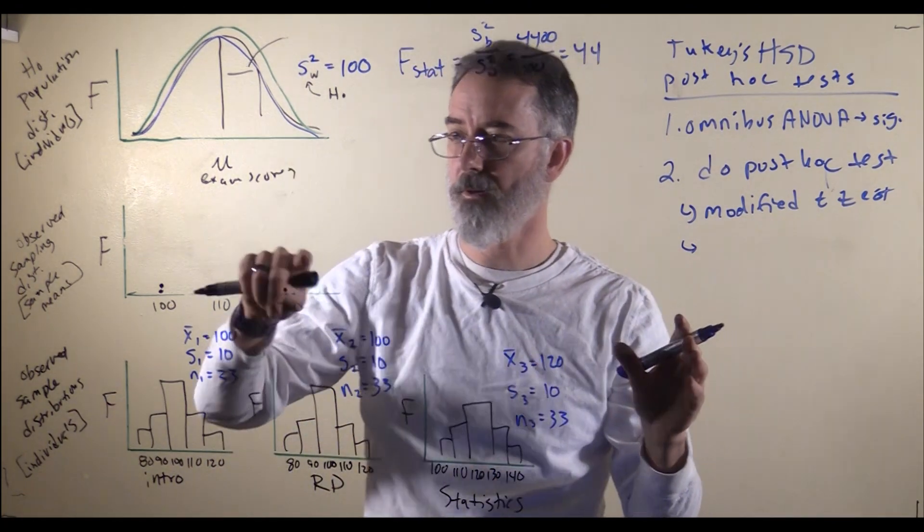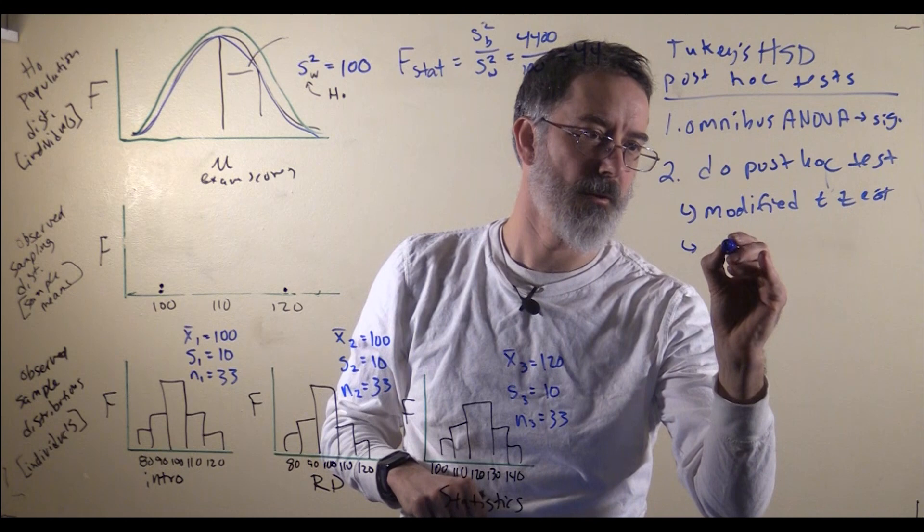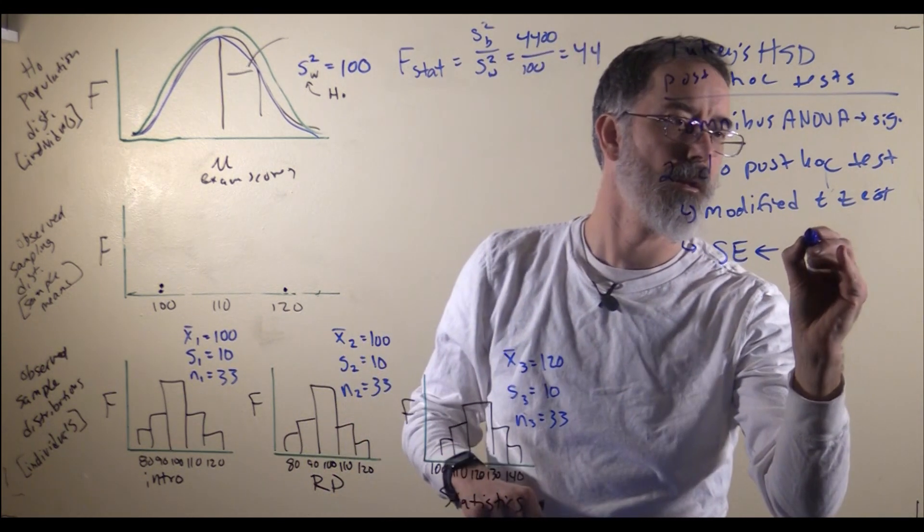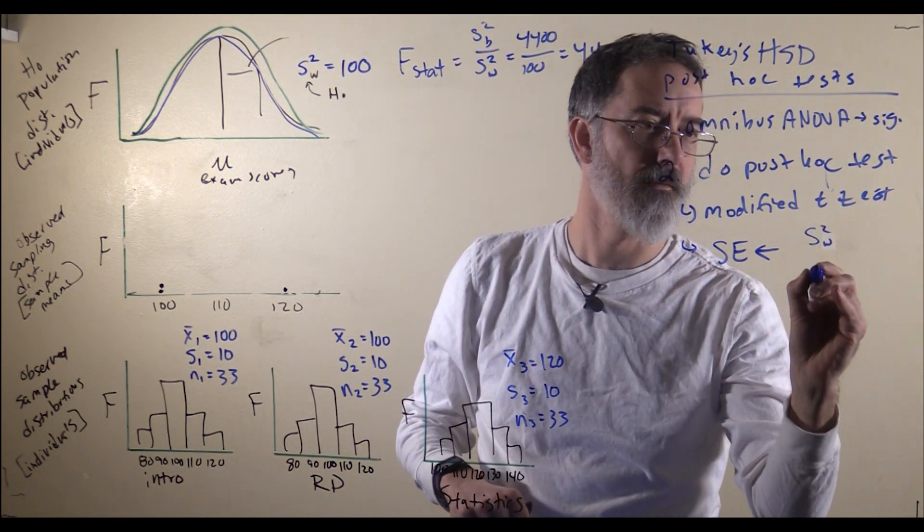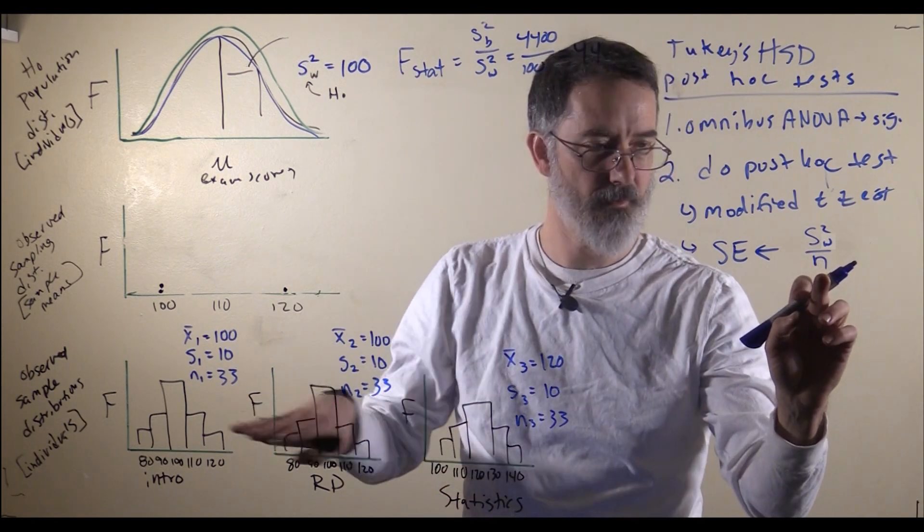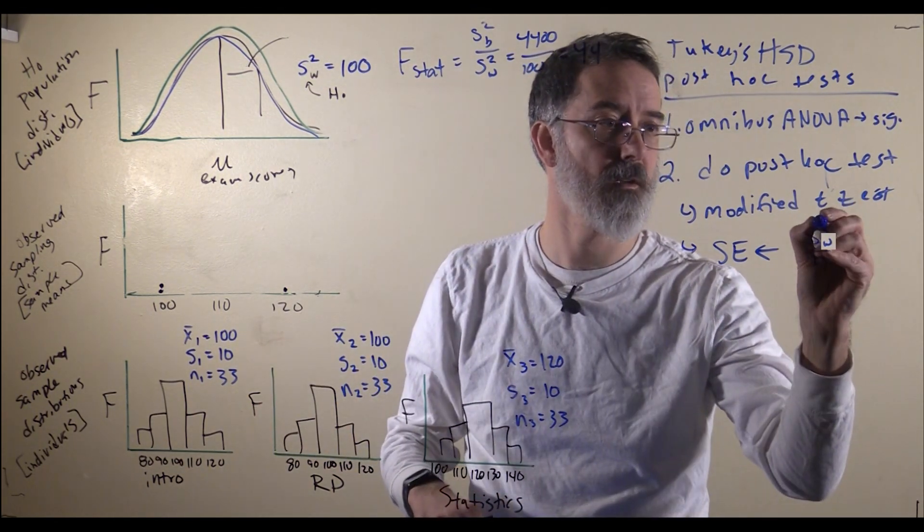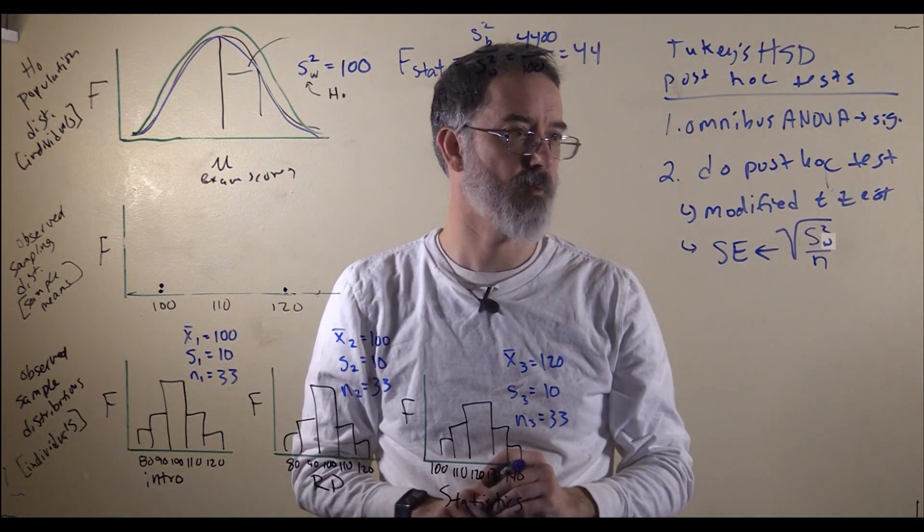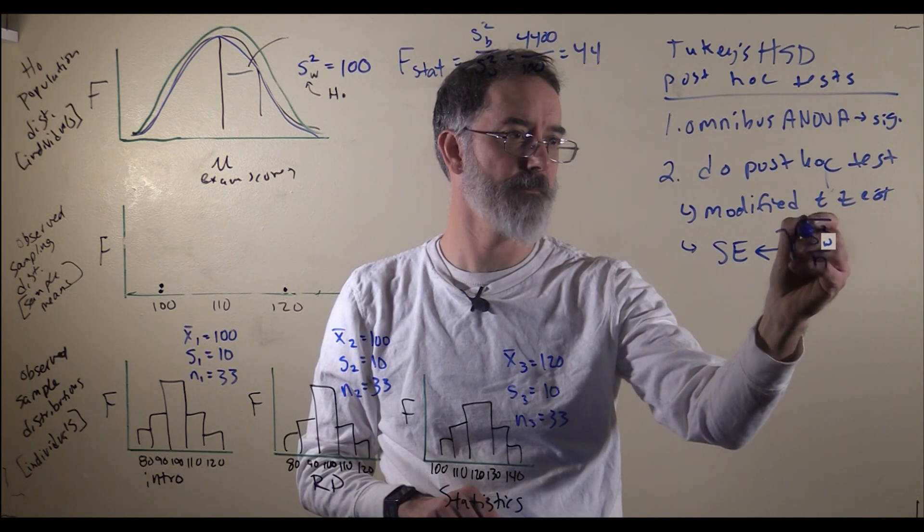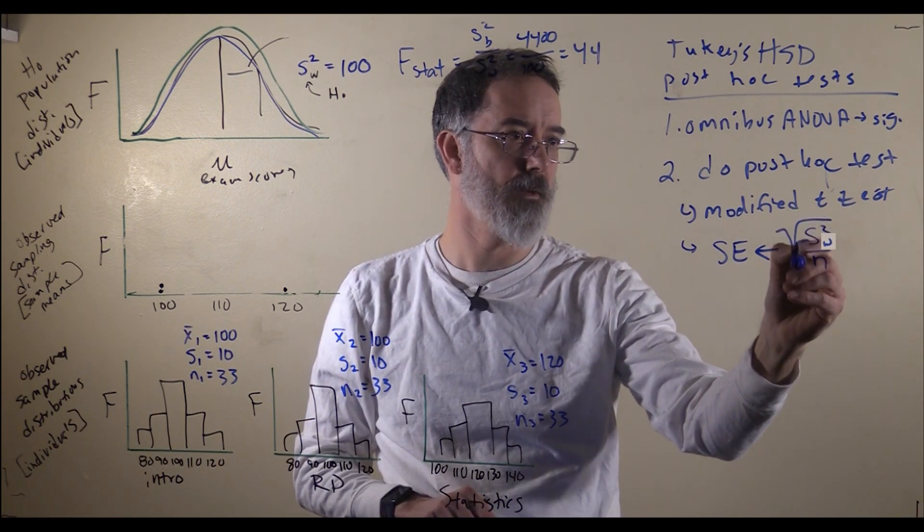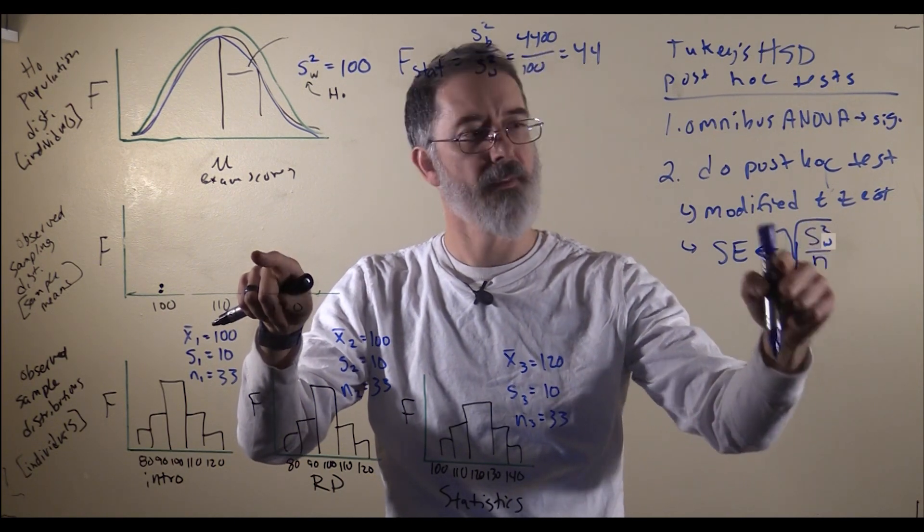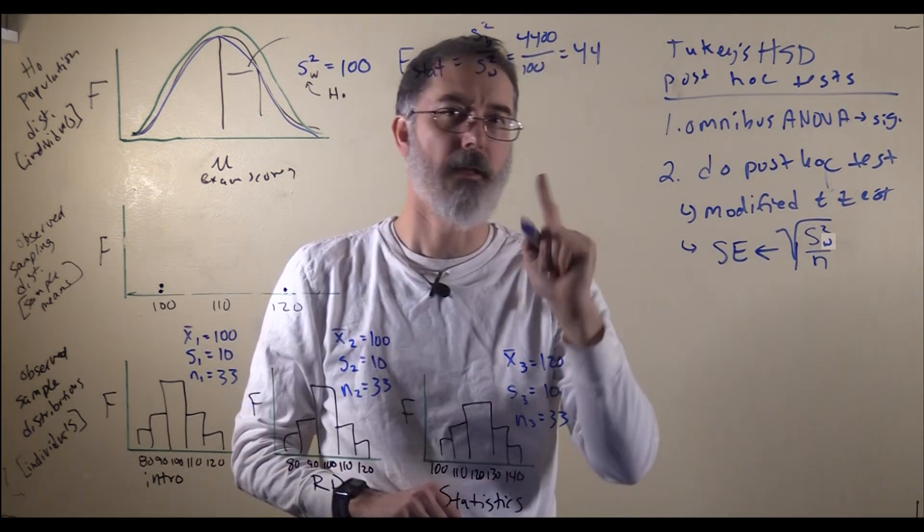For our standard error, what we are going to do is use the variance within divided by the sample size. Remember, this will work only if your sample sizes are all the same, which they are for us. And of course, it has got to be the square root. This is the population's variance estimate. We want to turn it into a standard error, so we need to divide it by the sample size and then take the square root.